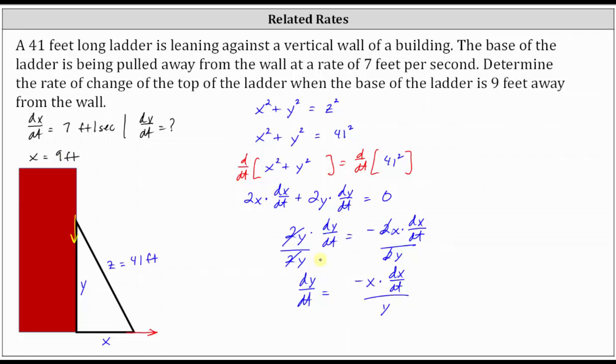Notice to find dy dt, we need to know X, Y, and dx dt. We know dx dt is seven feet per second. We're trying to find dy dt when X equals nine, but we still have to determine the value of Y when X is nine and we know Z is 41.